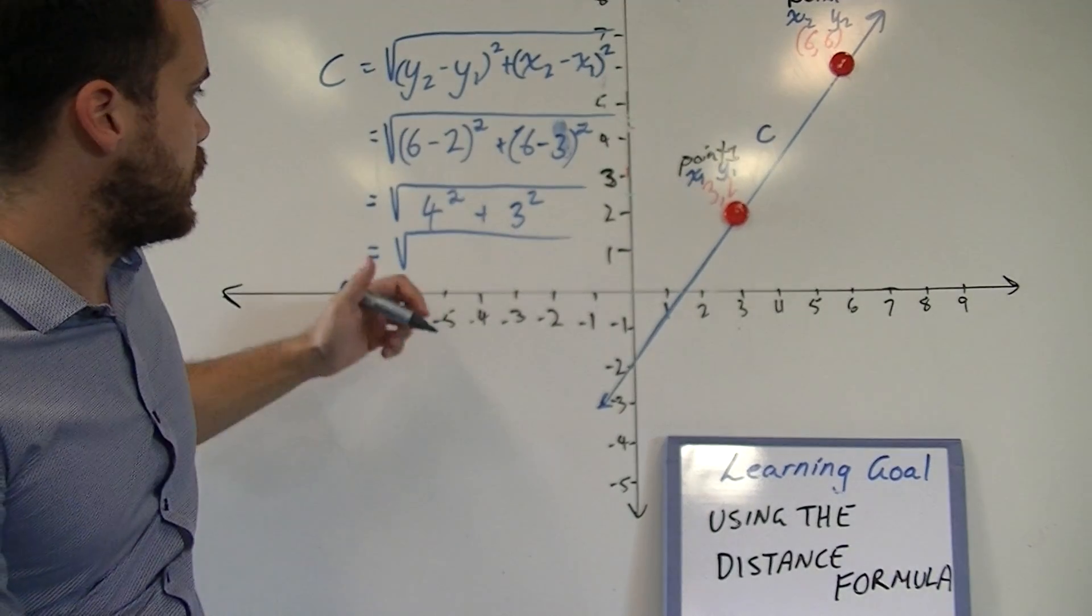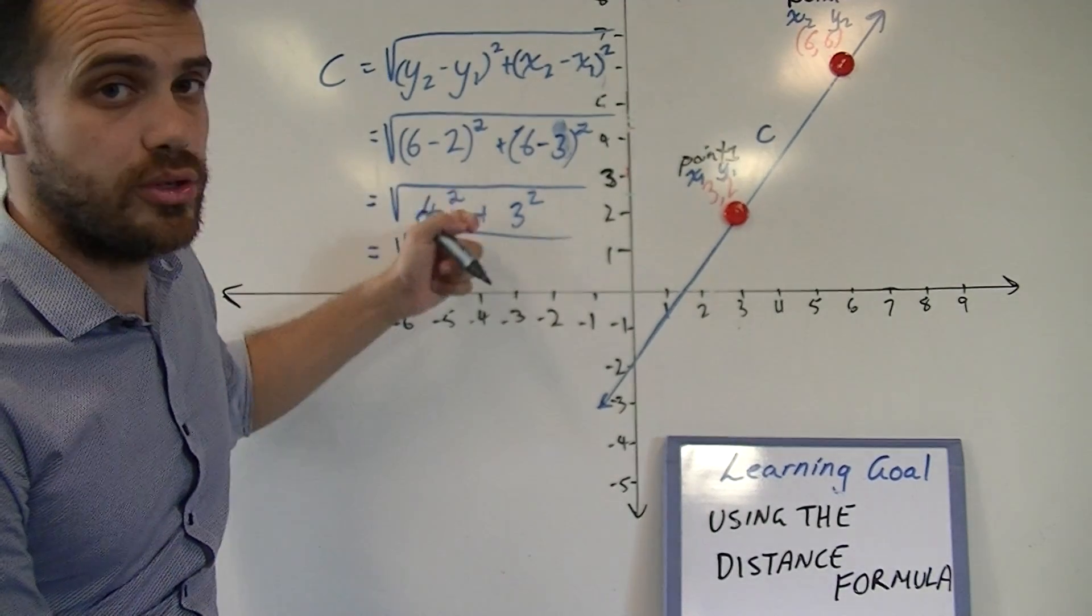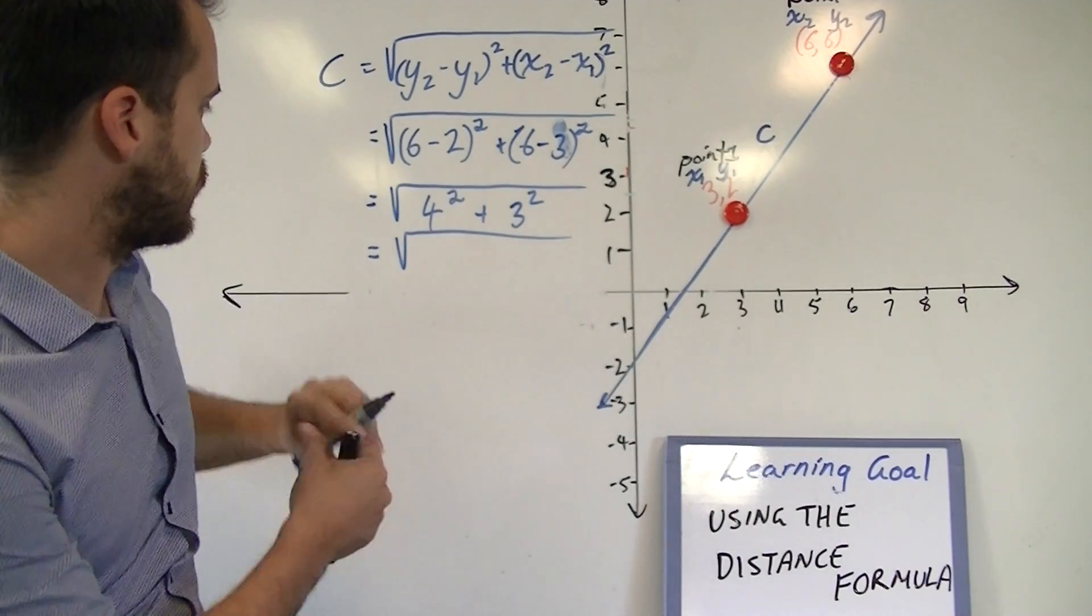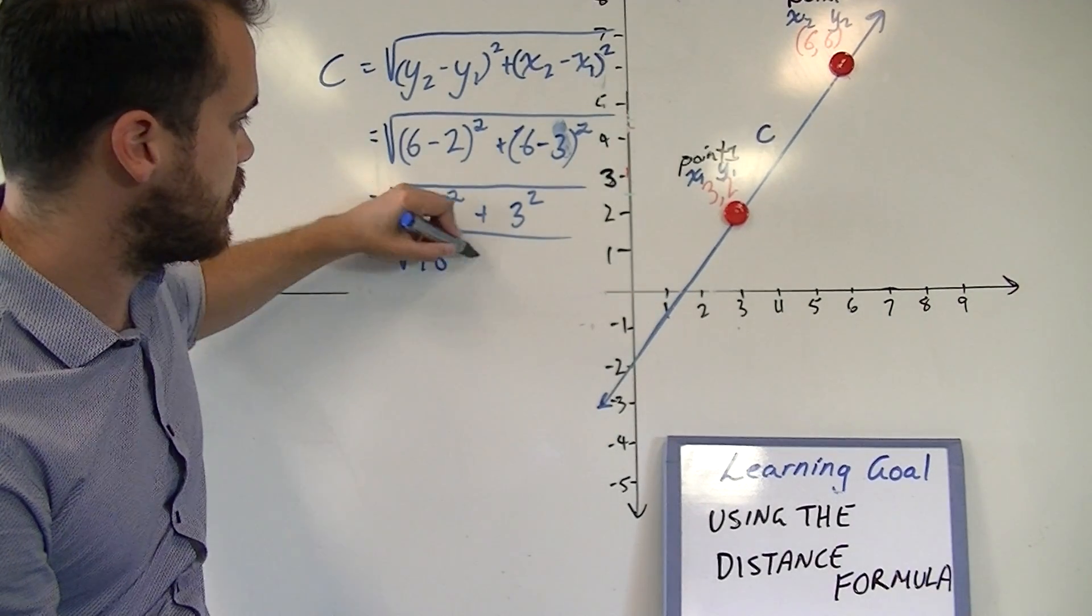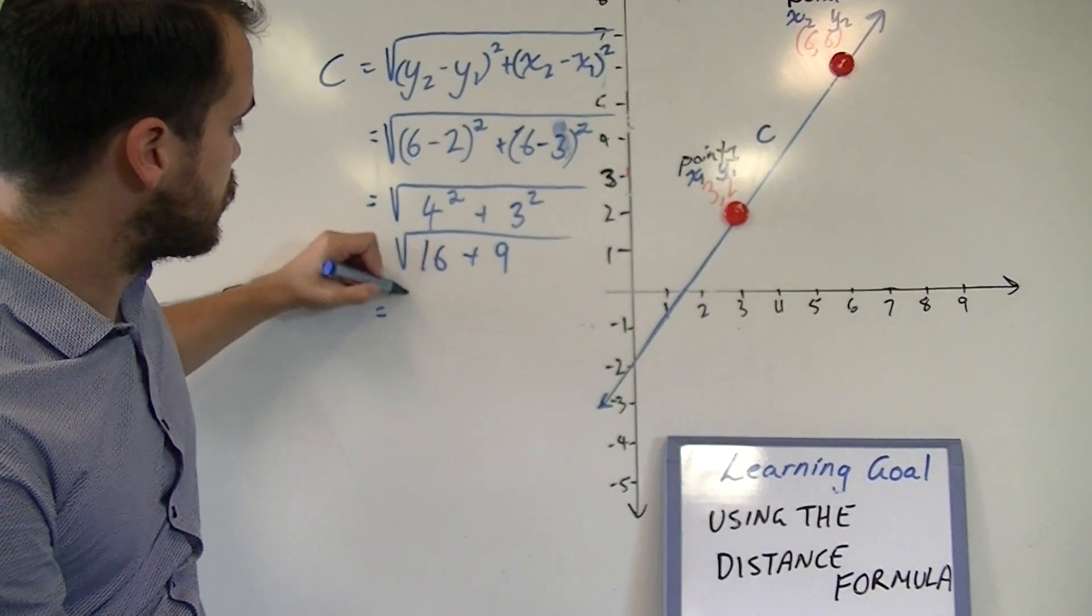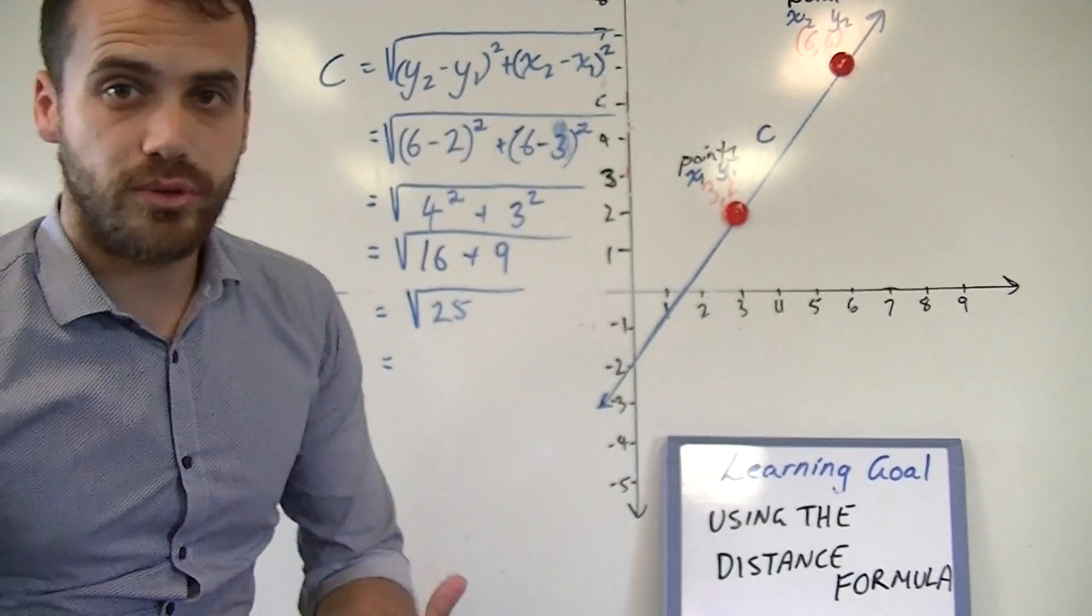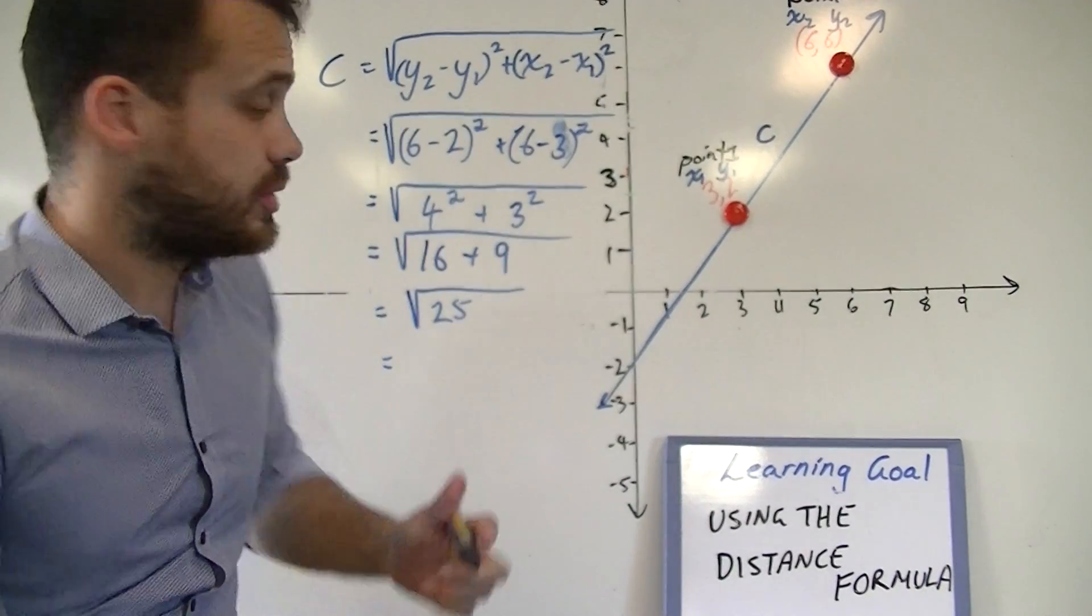Now, looking at that, we have the square root of four squared plus three squared. That's going to be the square root of 16 plus nine, which is going to be the square root of 25. Now, the square root of 25, you should know, is five.